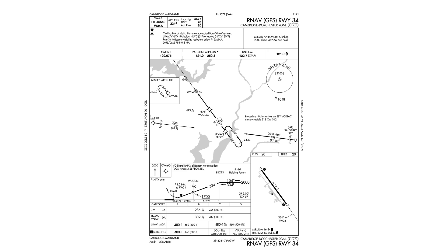We can only use Cambridge as an alternate if we have a WAAS-enabled GPS on board; otherwise, we'd have to use an airport with nav aids like ILS or VORs. We can only use this airport as the alternate if the weather forecast meets the non-precision requirements of at least 800-foot ceilings and two statute miles of visibility. When planning, we have to use the higher LNAV minimums of 480 feet. However, if we actually diverted to this field, shot the LPV approach, and confirmed that our WAAS was working properly, we could go down to the LPV decision altitude of 286 feet.